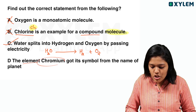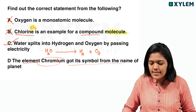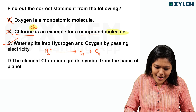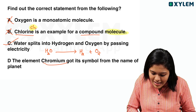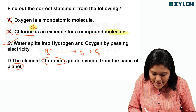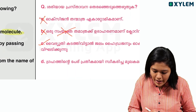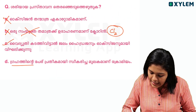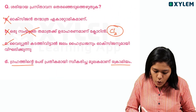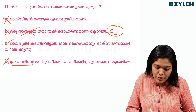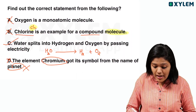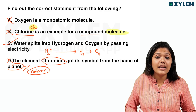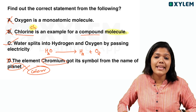The element chromium got its symbol from the name of the planet. The name chromium is related to color — 'chrome' means color. So the symbol comes from the color associated with the planet.